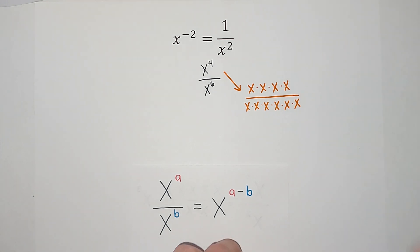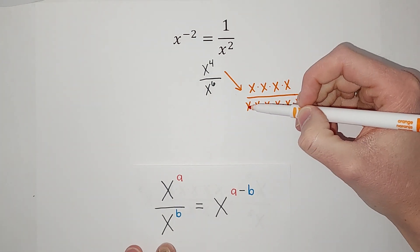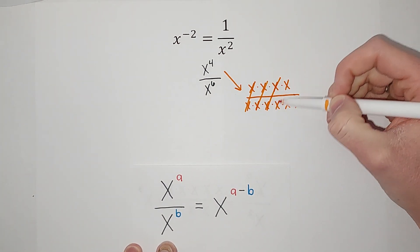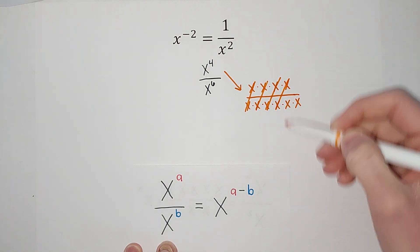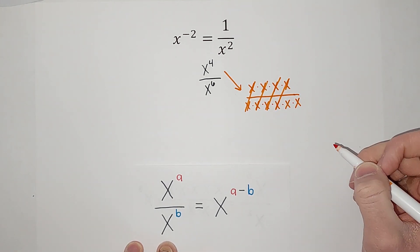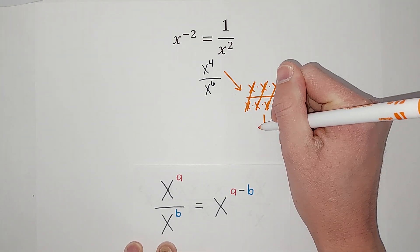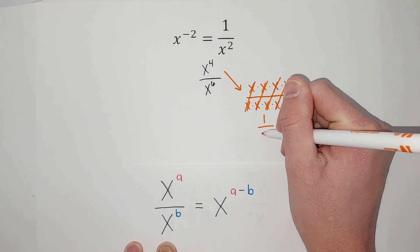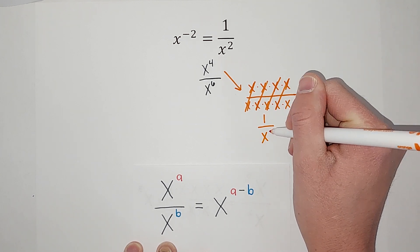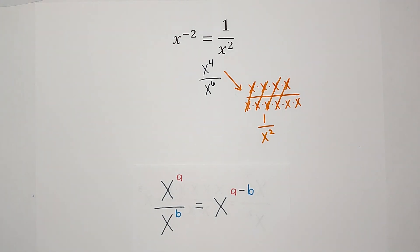Almost lost track there — six on the bottom. And then when I have an x over an x, that just simplifies down to a one, right? So some of these will cancel away, and I'm left with two on the bottom. So I could write this as one over x times x, which is x squared.